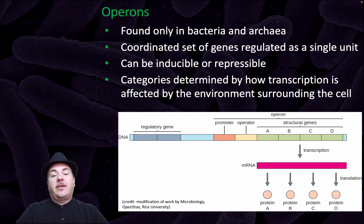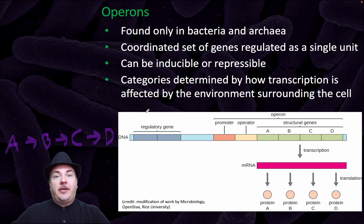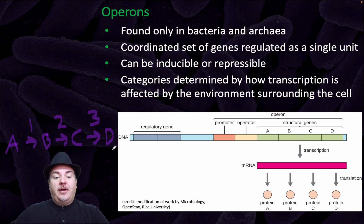So what is an operon? Before I discuss an operon, let's back up. In a previous lecture, we learned about metabolic pathways. As a refresher, recall that a metabolic pathway is where you have a chemical A, and you're going to turn that into a chemical B, then chemical B is turned into chemical C, and chemical C into chemical D. Each step in this metabolic pathway is catalyzed by a different specific enzyme — enzyme one turns A into B, enzyme two turns B into C, enzyme three turns C into D.